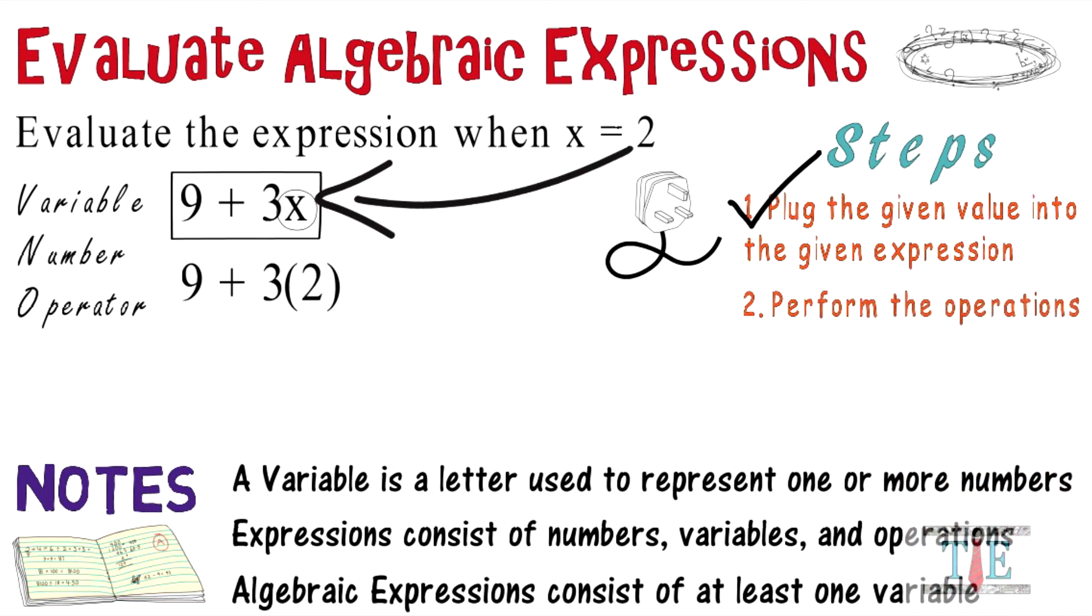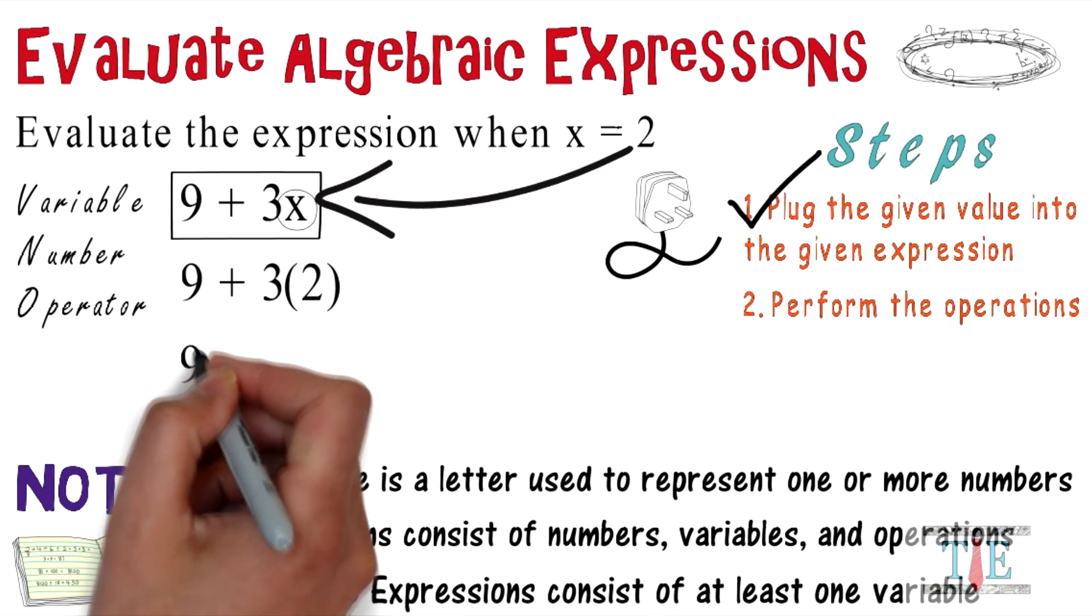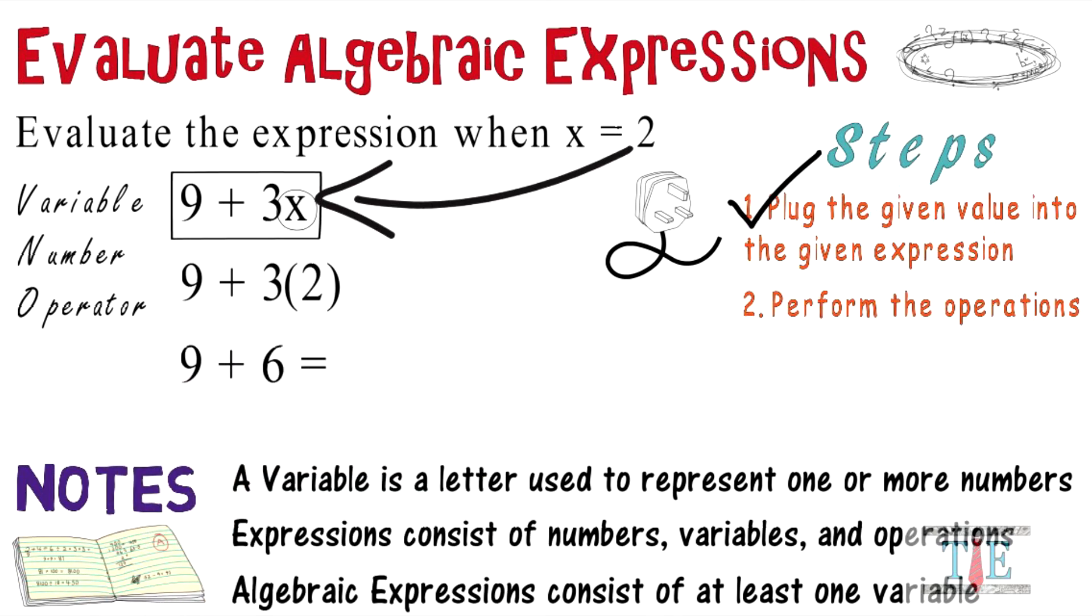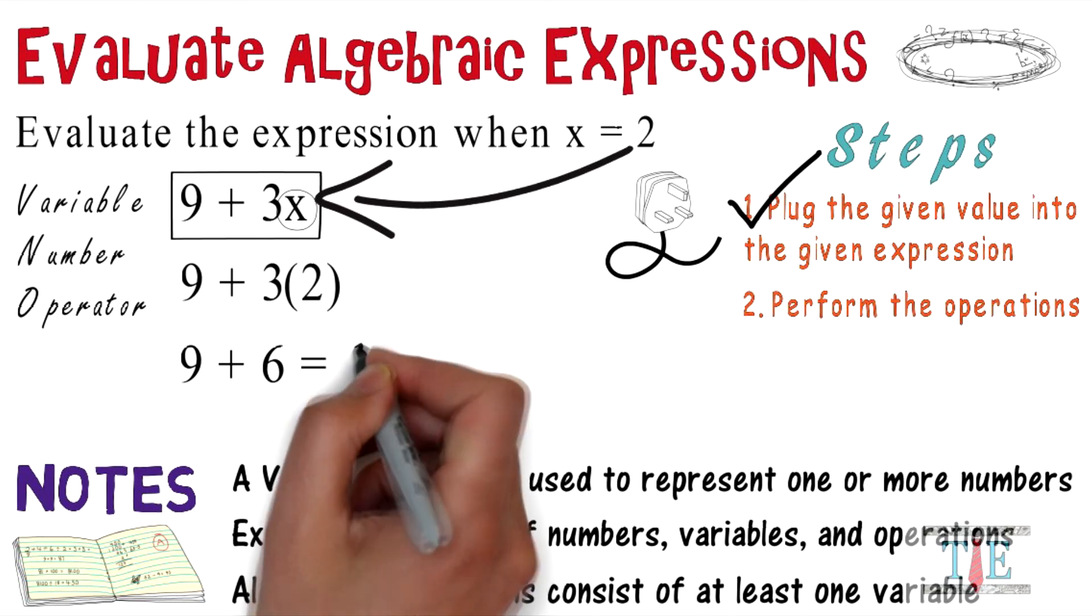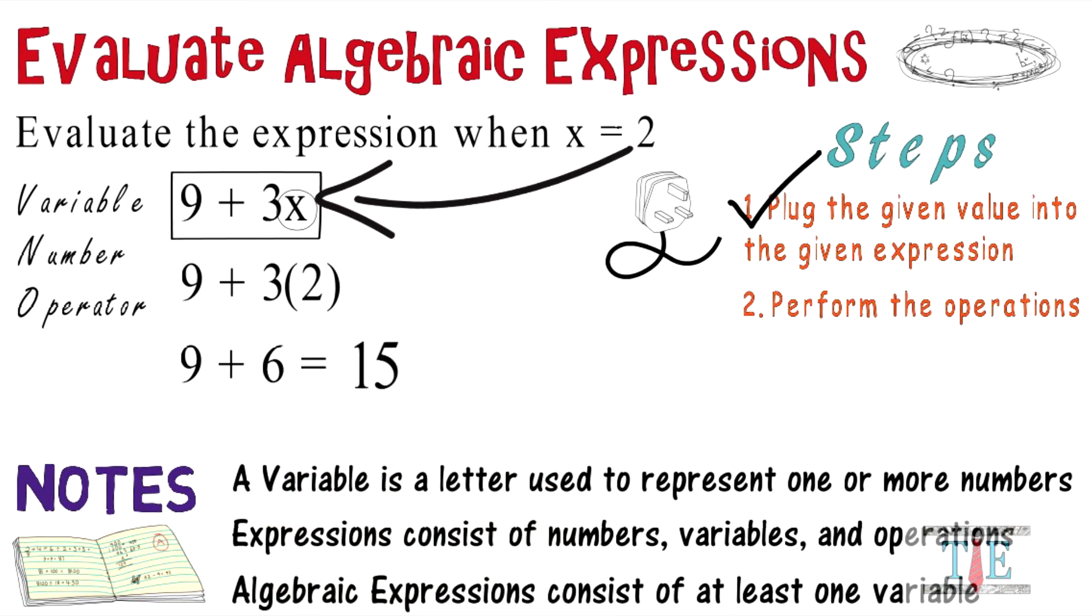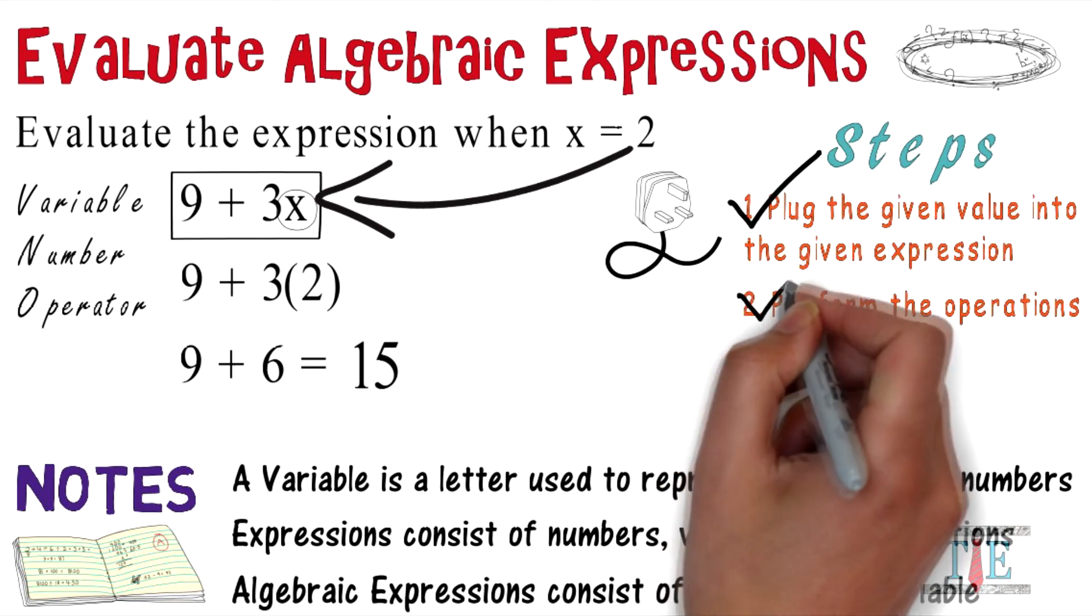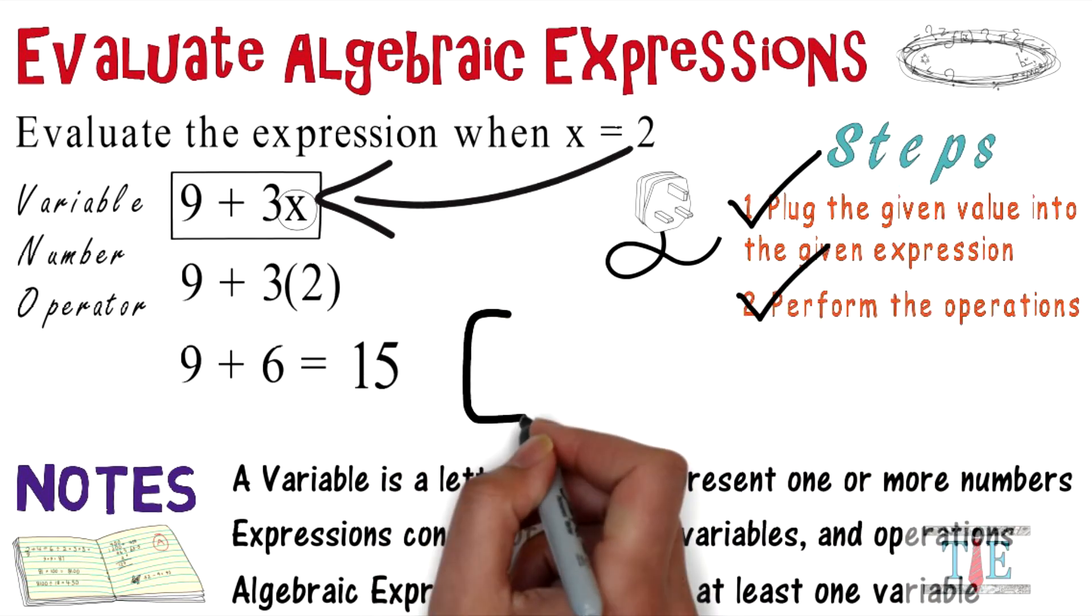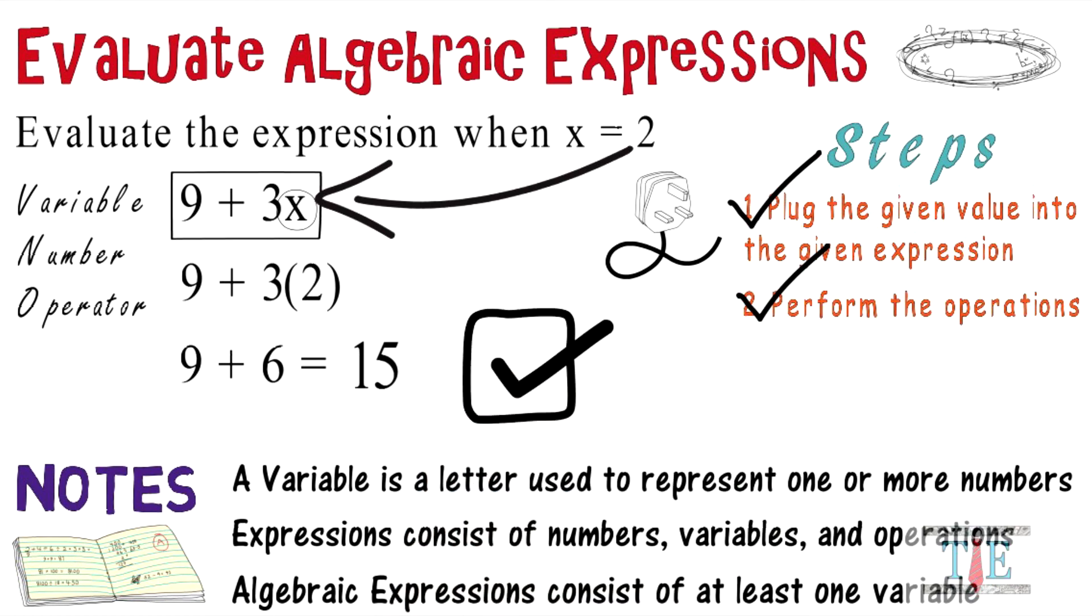So 9 plus 3 times 2. 3 times 2 is 6. Now we have 9 plus 6, which gives us 15. And we've performed our operations and we can check this off because now we're done.